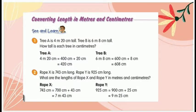Teman-teman, kita akan membahas tentang Converting Length in Meters and Centimeters. Number A: 3A is 4 meter 20 centimeter. 3B is 6 meter 8 centimeter tall. How tall is each tree in centimeter? Masih ingat tidak tentang tangga yang kemarin sudah dijelaskan Miss Fina? Di sini ada meter dan centimeter. Dari dua pohon tersebut, mempunyai tinggi berapa centimeter ya teman-teman?